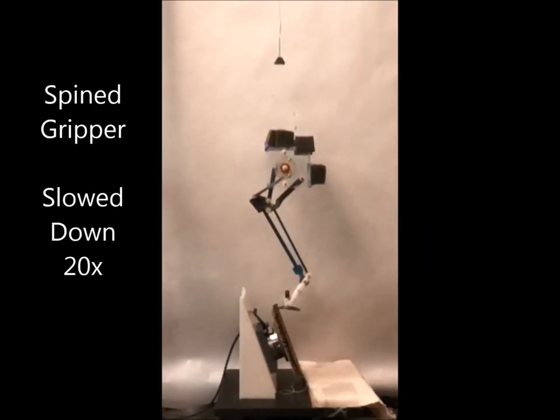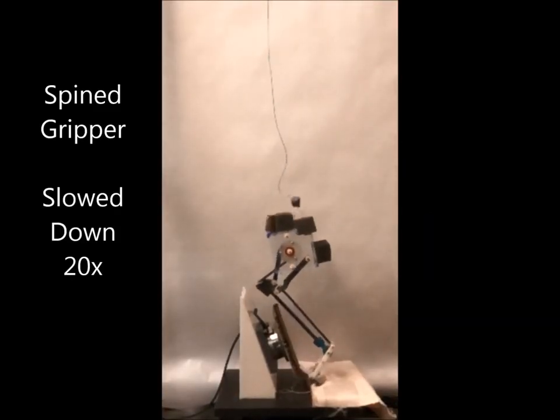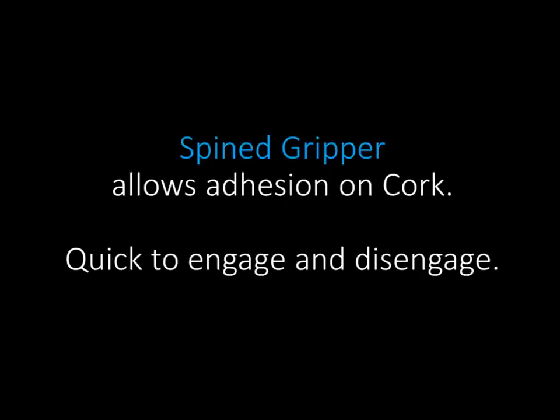The spined gripper cannot rebound off 70 degrees. The spined gripper allows adhesion and is quick to engage and disengage.